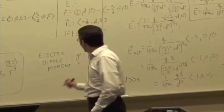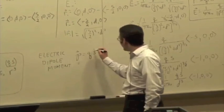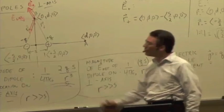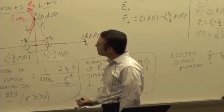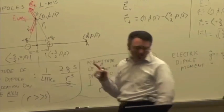It's actually a vector. It's actually a vector and it points from negative to positive, isn't it? I'm confused. Don't quote me on that. Check the book.